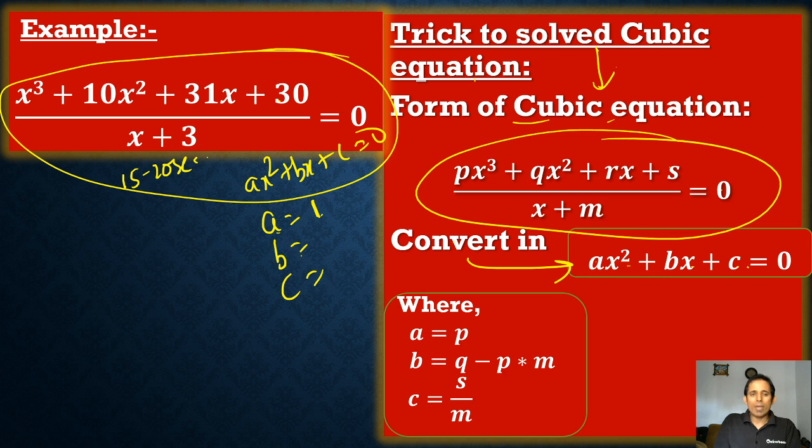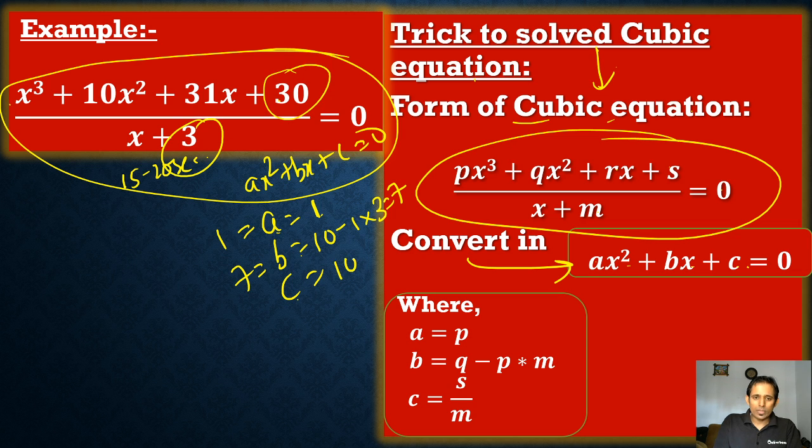What is b? b equals q minus pm. So q is what? That is 10 minus p. p is 1, 1 into m. m is 3. So that is equal to 7. So b equals 7. a is equal to 1. And c is equal to what? s by m. So 30 by 3, that is equal to 10.